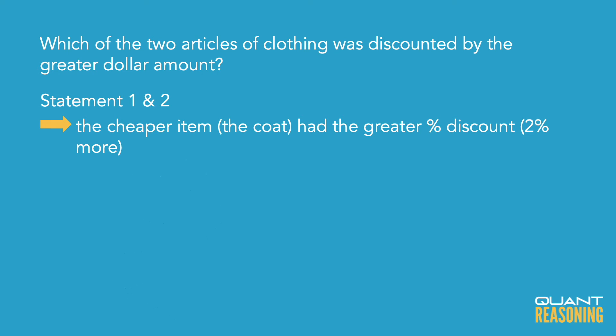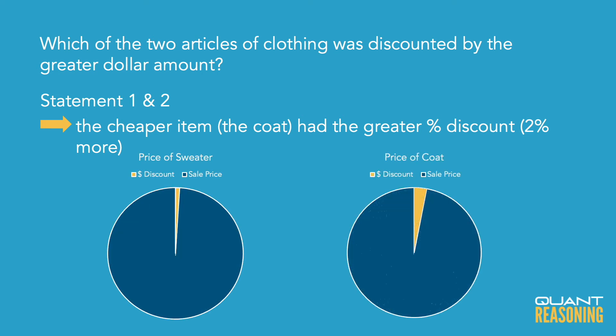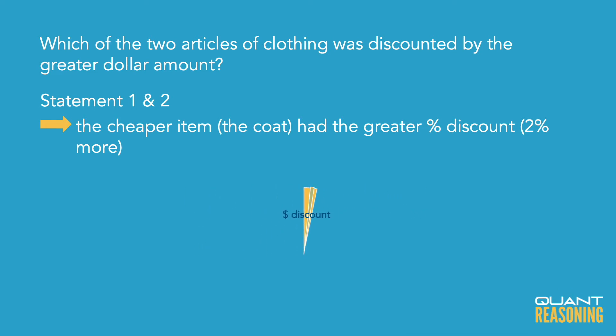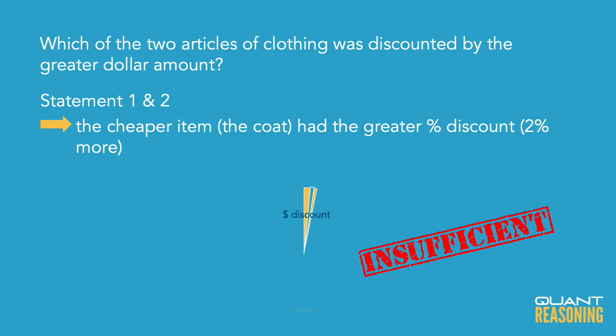If only they had applied the greater percent discount to the more expensive item, then we'd be able to say yes, that's the item on which we'd save more dollars. But the way they combined the bigger percent discount with the cheaper item, there's just no way for us to know without knowing exactly what the prices of the two items are. There's no way to answer the question, and therefore the correct answer is E.